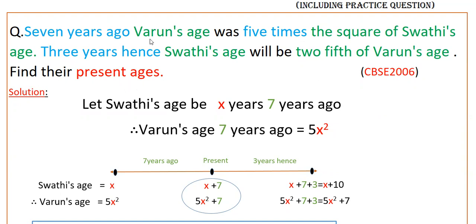So here, 7 years ago, Varun's age was 5 times the square of Swathi's age. Let Swathi's age 7 years ago be X years. Then Varun's age 7 years ago was 5X squared, because it is 5 times the square of Swathi's age, which was X years. So 5 into X squared.